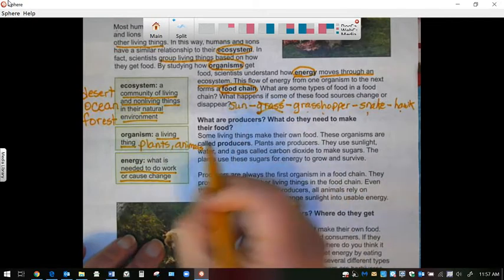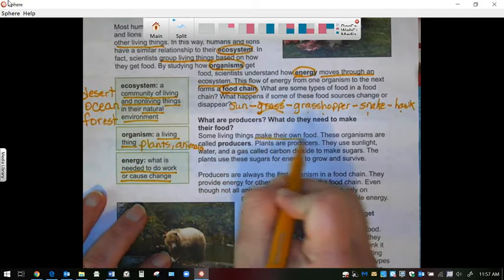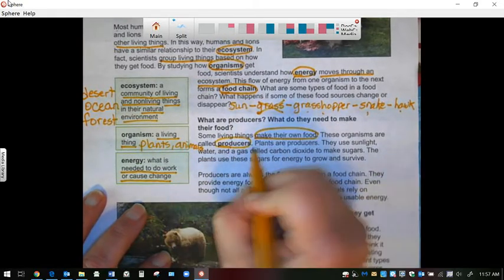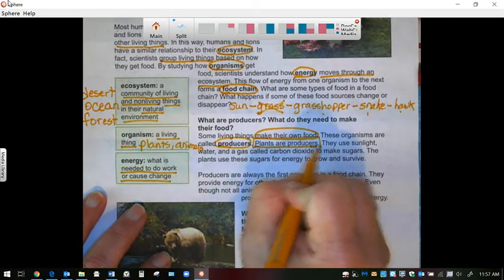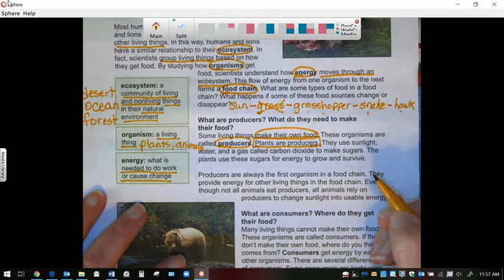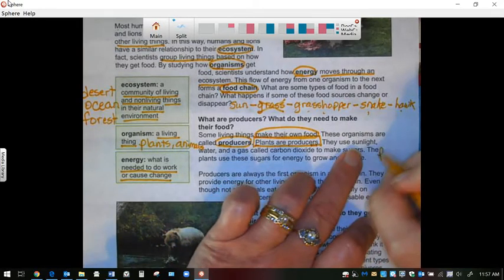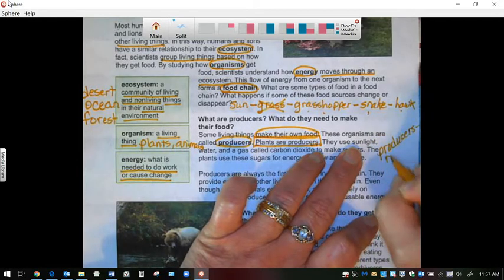So what are producers? Some living things, they make their own food. Those are producers. Plants are producers. They use sunlight, water and gas called carbon dioxide. So we're going to put a note here that producers make food.